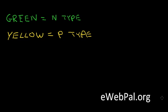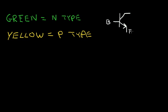In this video, I'm going to talk about the NPN and the PNP transistor and how these transistors are constructed on an integrated circuit. Recall that the symbol for the NPN transistor has a base, an emitter terminal, and a collector terminal. I'm going to use a color code: green color will denote N-type silicon and yellow color will denote P-type silicon.